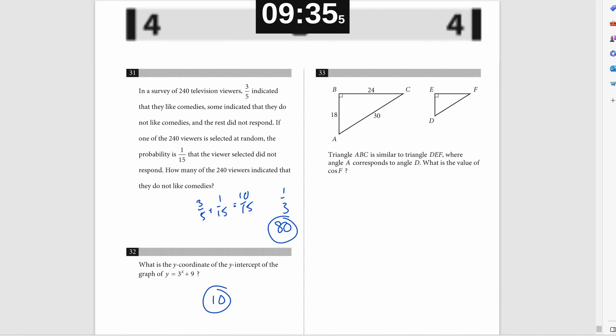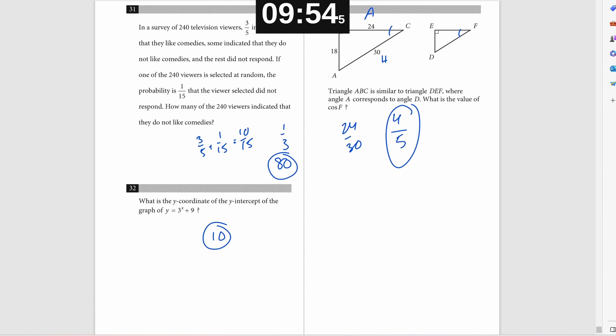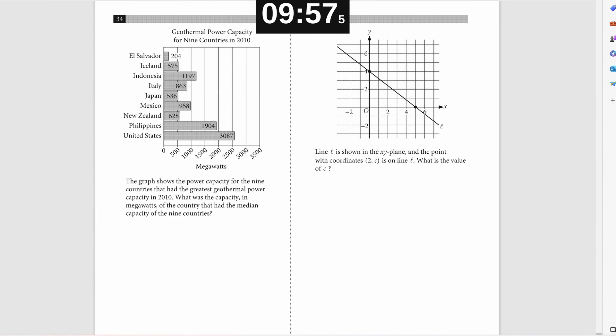Problem number 32, I plug in X for zero. Three to the zero is one. So one plus nine is 10. Problem 33. If two triangles are similar, then their cosine sine and tangent are going to be the same because the ratios between their side lengths are going to be the same. So I'm just using the ratio of the side lengths in the first triangle to get the cosine of the second triangle. So that's four over five. When you simplify the fraction. Problem 34 is getting at the median. So I'm just crossing out the least values and the greatest values of the table. And when you do all the crossing out, you get Italy eight, 63.